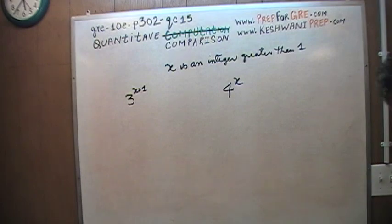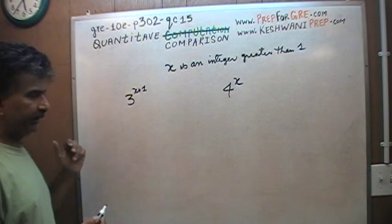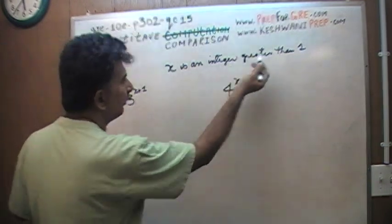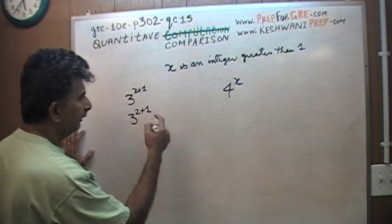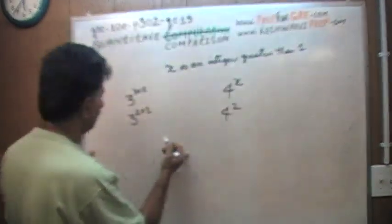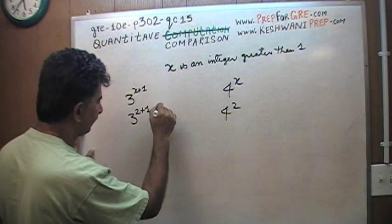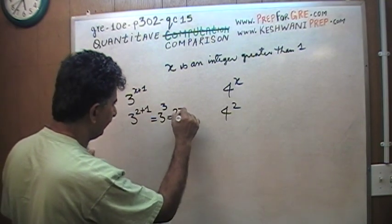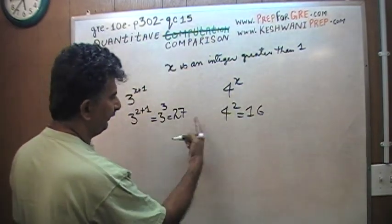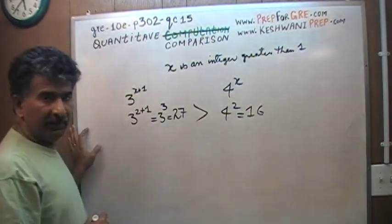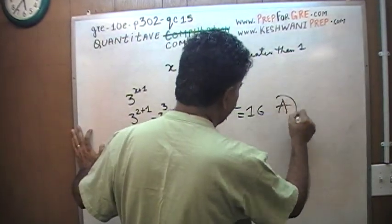Here's what you do: plug in a number. Since x has to be more than one, let's plug in x equals 2. That gives us 3 raised to the power of 2 plus 1, which is 3 cubed, equals 27, versus 4 raised to the 2, which is 16. So 27 versus 16 — based on this work so far, the answer appears to be A.